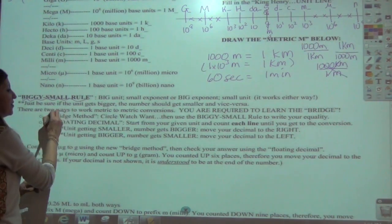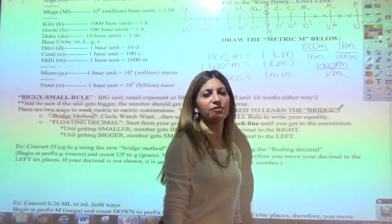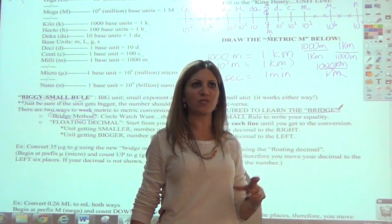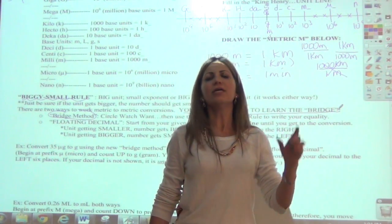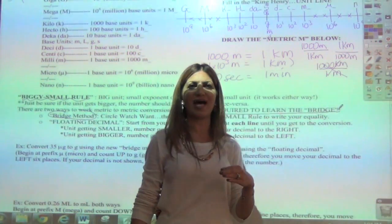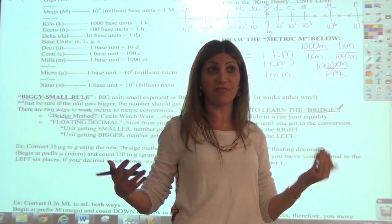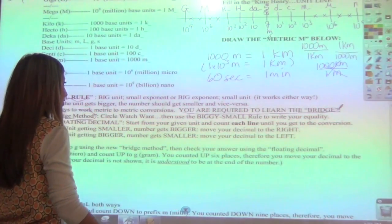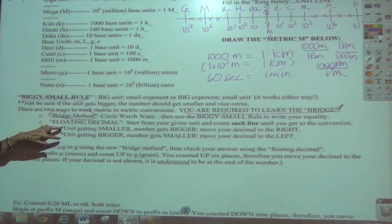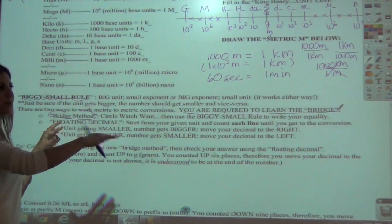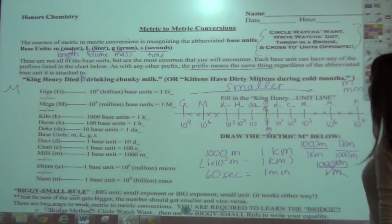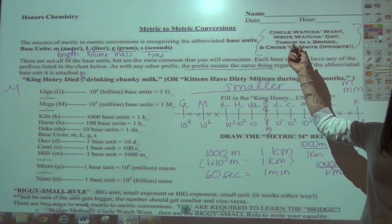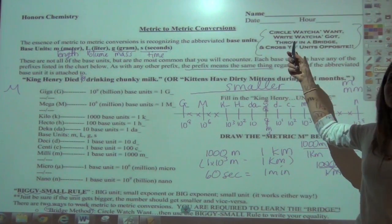Everyone say it again: circle what you want, write what you got, throw in a bridge, and cross your units opposite. Now let's try the two problems. The problem says: convert 35 micrograms to grams using the bridge method, then check your answer.